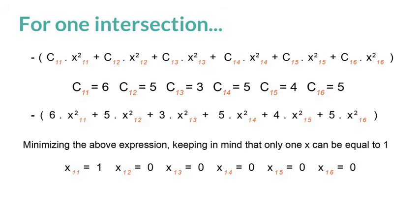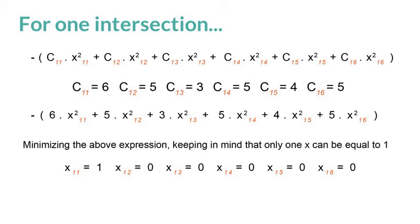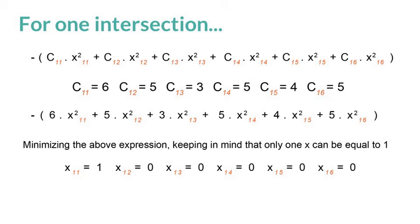If we express what I just said into a QUBO form, we would have something like this. This is an expression for a single intersection. The c_ij are being multiplied with their respective x_ij. And if we put in the value of these c_ij from the previous slide, such that c_11 is 6, c_12 is 5, and so on, we get this expression.